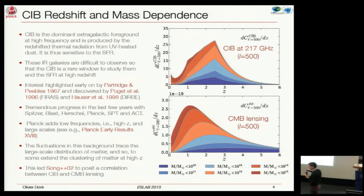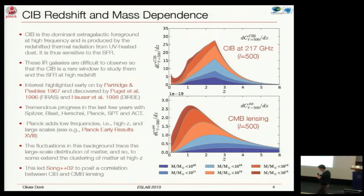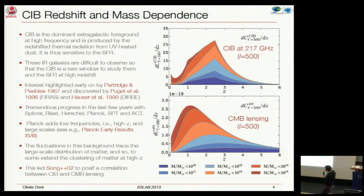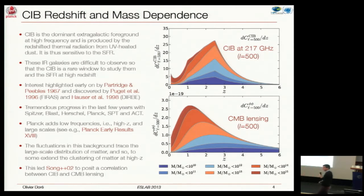Because the fluctuations in this background trace the same large-scale structure distribution that creates the lensing, we can expect a correlation between the CIB and the CMB. Looking more quantitatively, this plot shows the differential sensitivity of the CIB at 217 GHz for multipole 500 as a function of redshift, with color code corresponding to mass cut. The CIB receives most of its contribution from redshift about two and from halo masses between 10^12 and 10^13. The CMB lensing also receives substantial contributions from the same mass in the same redshift range, so you do expect a correlation between these two tracers.